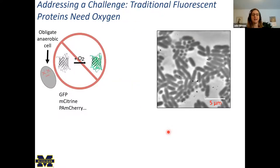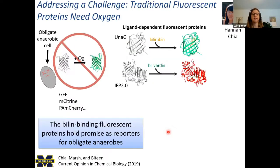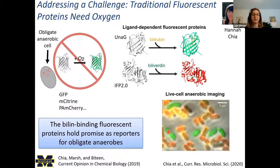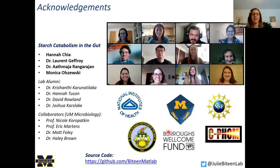Hannah has really been thinking about this problem. She wrote a nice review thinking about all these other types of labeling schemes other than GFP. We finally settled on biliverdin-based fluorescent proteins like UnaG and IFP 2.0. Hannah has shown that live cell anaerobic imaging is possible with these proteins. Instead of the oxidation reaction, these proteins take in a substrate — the substrates are biocompatible and non-toxic — and they seem to work and allow us to differentiate between, for example, B. theta and B. ovatus. We're really excited about all this work moving forward. Let me end there and thank the people, especially Hannah, Laurent, Atmaja, Krish, and Hannah Toussaint, whose work I've been showing, and thanks again for the invitation to be here.